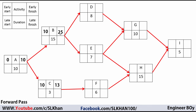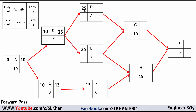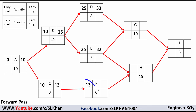We carry the early finish values forward: 25 becomes the early start of both Activity D and E, and 13 is the early start of Activity F. Adding durations: D is 25 plus 8 equals 33; E is 25 plus 7 equals 32; F is 13 plus 6 equals 19.